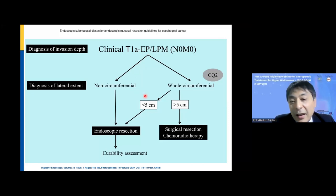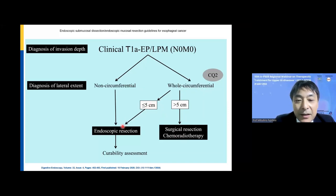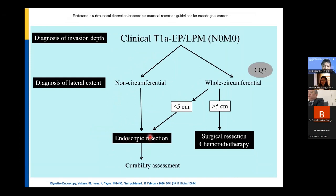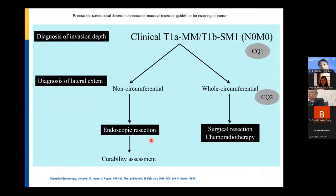For the esophagus, T1a EP or LPM lesions are the absolute indication for endoscopic resection. When the region is less than five centimeters or non-circumferential in extent, it is an absolute indication for endoscopic resection. When the region is MM or SM1 and circumferential, surgical resection or chemoradiotherapy is considered. When non-circumferential, endoscopic resection is applied as a diagnostic measure.